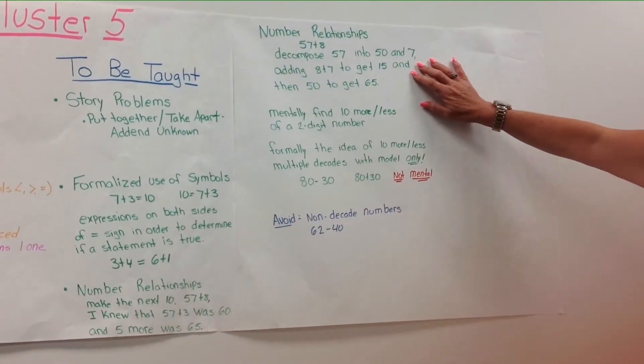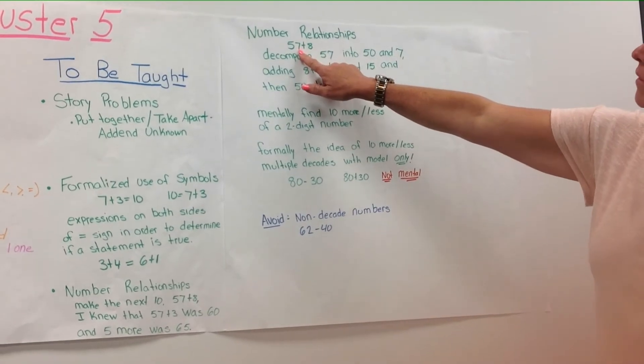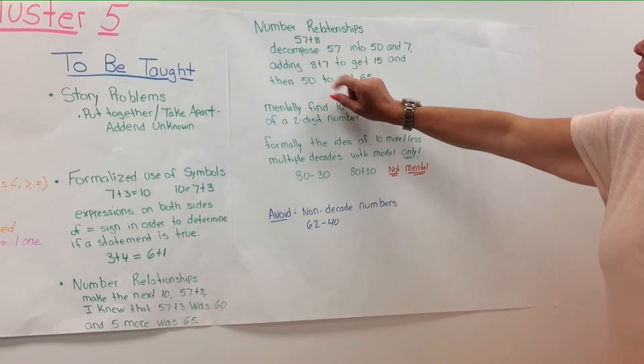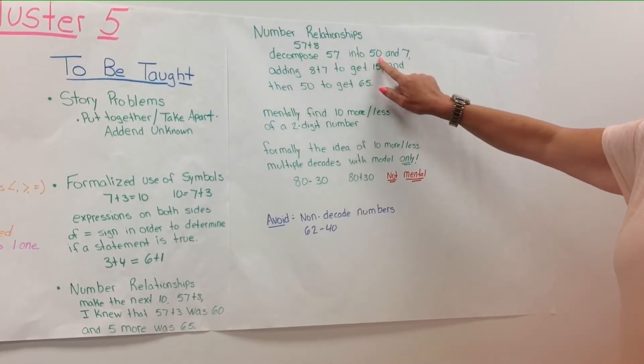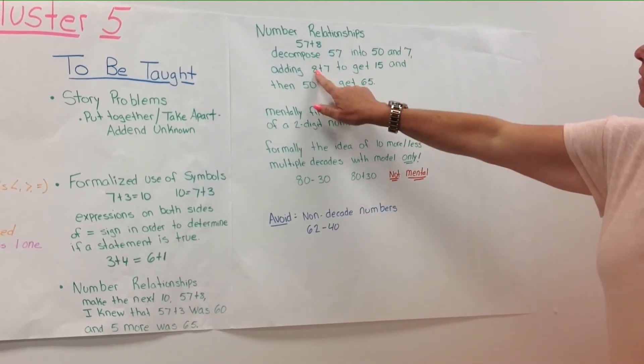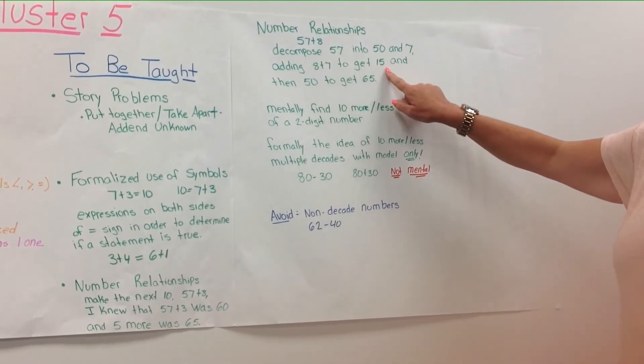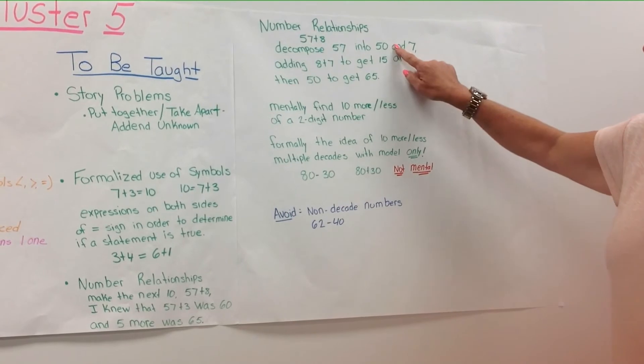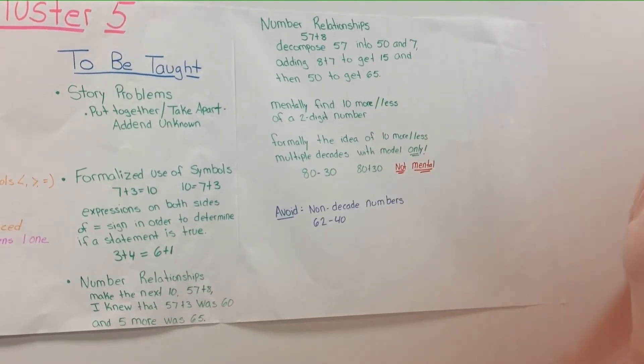Number relationships also will take that same problem, 57 plus 8, and decompose 57 to 50 and 7. Students will then add the 8 plus 7 to get 15. They will come to determine that 50 plus the 15 would be 65.